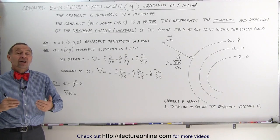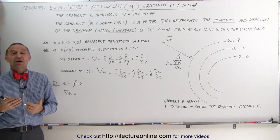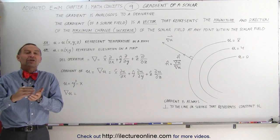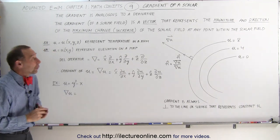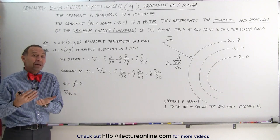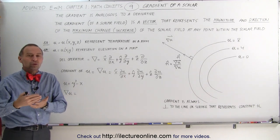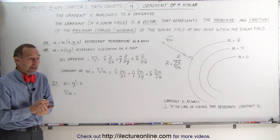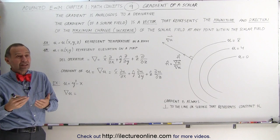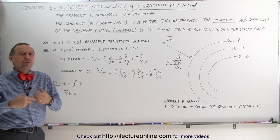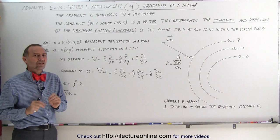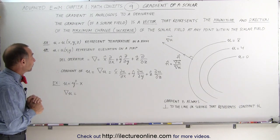Welcome to ElectronLine. Now let's talk about the gradient of a scalar field. The gradient is analogous to a derivative — when we talk about taking the gradient of a scalar field, it's like taking the derivative of that field, but it has a specific meaning. It's more than just taking the derivative of that field.